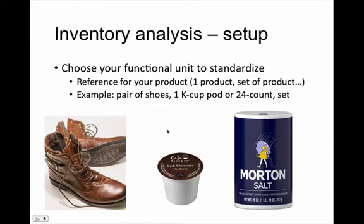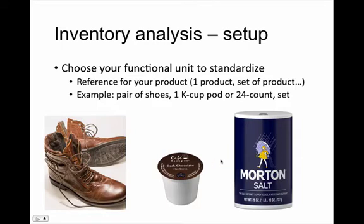You can also think of maybe one K-cup — it's one use, but do you really go out and buy just one K-cup at a time? You usually buy it in a 24-count. So depending on what your goal is for your LCA, you might choose one or you might choose 24. With Morton salt, you might choose one pound or ten pounds — it depends on what you're going for. It comes down to what the product is useful for and what your goal is in your LCA.